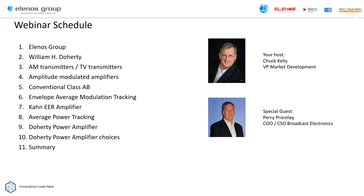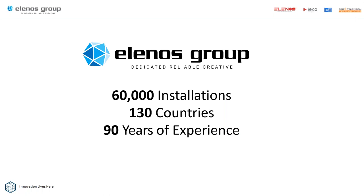The Elenos Group includes the companies Elenos, Satelco, BE, and Pro Television. We have over 60,000 installations worldwide in 130 countries and over 90 years of experience.